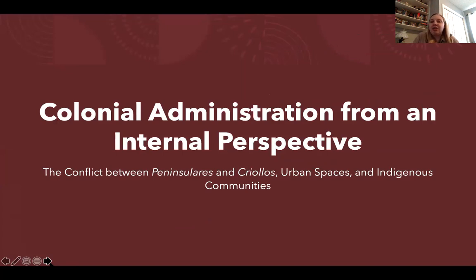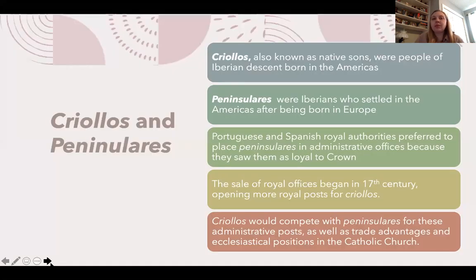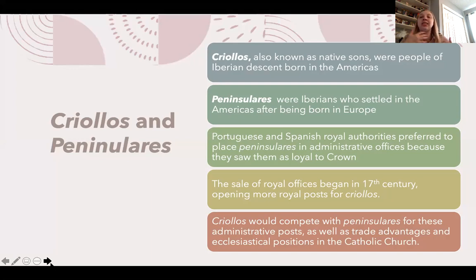How do we see colonial administration from the perspective of people living in the Spanish colonies? Criollos, also known as native sons, are Iberian descendants born in the Americas. Peninsulares, by contrast, were born in Europe and then settled in the New World. The Portuguese and Spanish Crowns preferred Peninsulares, believing they would be more loyal since they were born in Europe, so Peninsulares tended to control the highest administrative offices.